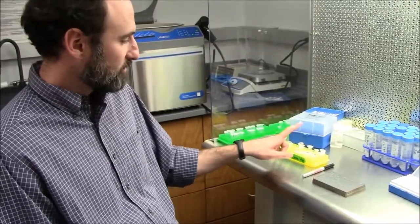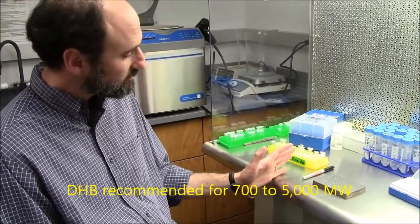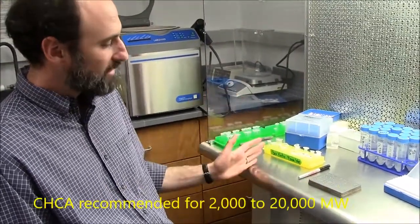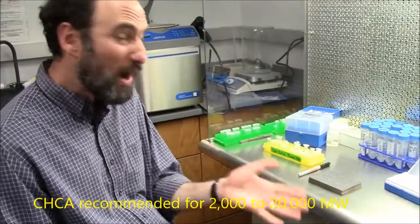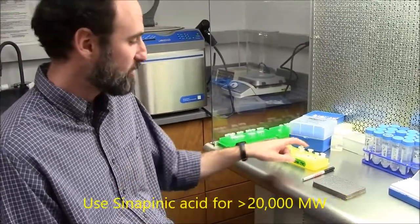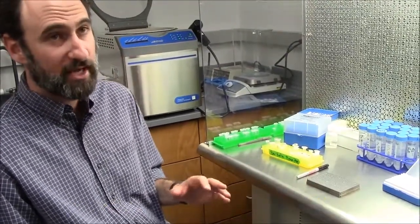and sinapinic acid has clusters up to about 2,000. So I usually recommend people use DHB from about 700 to about 5,000 molecular weight. CHCA takes over from about 2,000 to about 20,000-ish. If you have proteins in the 20,000 range, try both CHCA and sinapinic acid. Sinapinic acid is usually for proteins, intact proteins.